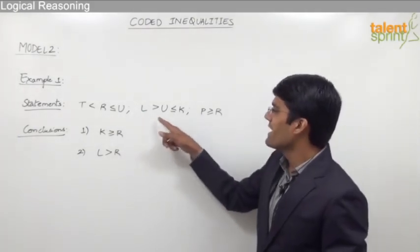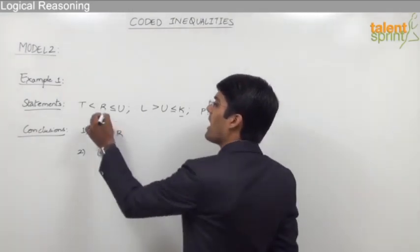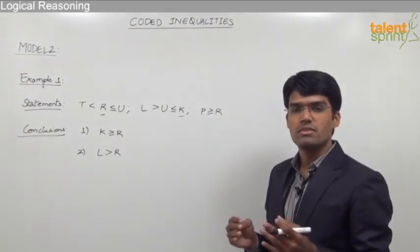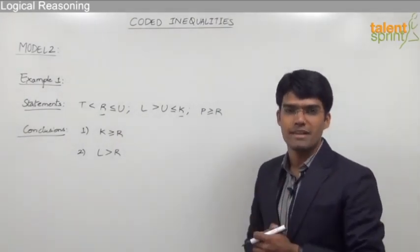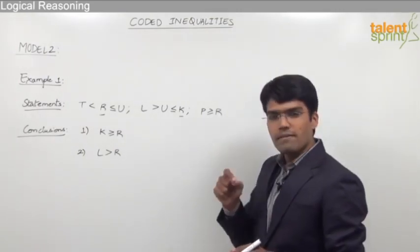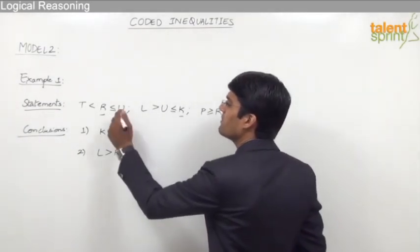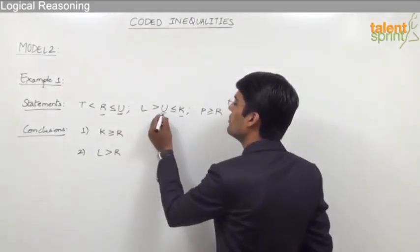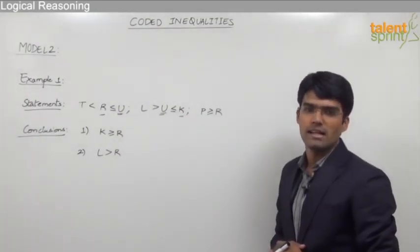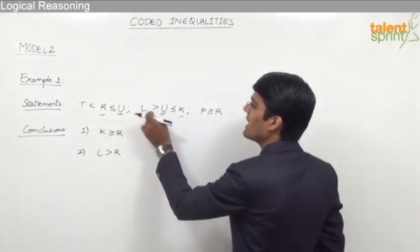In the given statements, variable k appears in statement 2 and variable r appears in statement 1. Before we compare k and r, we need to see how to connect these two statements. To connect them, we need a common variable — and that common variable is u. With the help of u, we can join the two statements and establish the relationship between k and r.